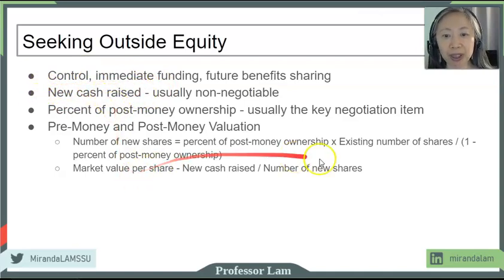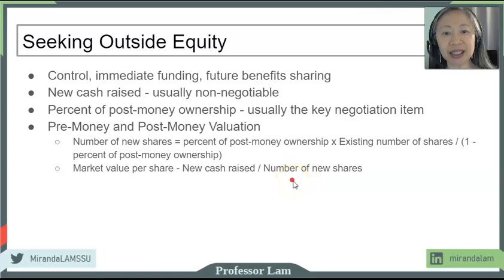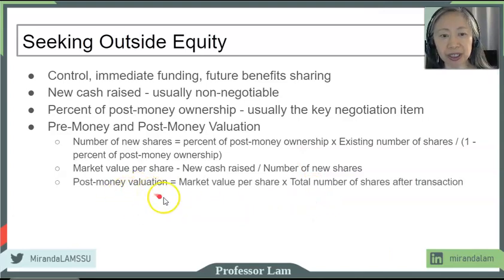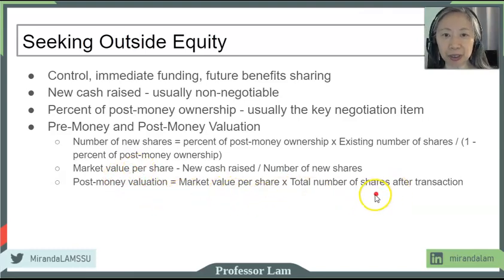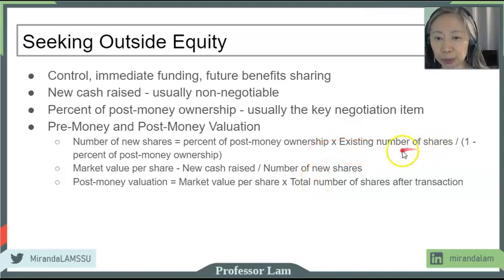The number of new shares that you give to the investor — that is the negotiation. And instead of negotiating in terms of number of shares, typically the negotiation is in percentage ownership. The post-money valuation is relatively straightforward: you take the market value per share times the total number of shares after the transaction. The total number of shares includes the new shares given to the new investor as well as the existing shares owned by the entrepreneur.